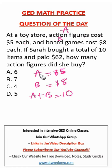$62, meaning that A times $5, let's say we have $5 times A plus $8 times B is equal to what? It's $62, so the total price of the, we don't know the amount of action figures, we don't know the amount of board games, that's why we represented them as A and B.